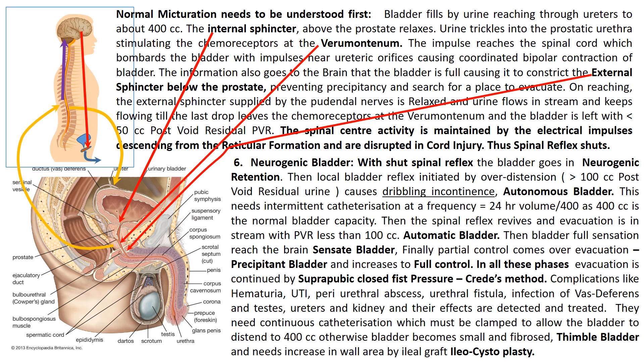Normal micturition must be understood before appreciating the effect of quadriplegia on the bladder. The bladder fills to about 400 cc; the internal sphincter above the prostate relaxes and urine trickles into the prostatic urethra, stimulating chemoreceptors at the verumontanum. The impulse reaches the spinal cord, which bombards the bladder causing coordinated bipolar contraction. Information also goes to the brain that the bladder is full, causing it to constrict the external sphincter below the prostate, preventing precipitancy.